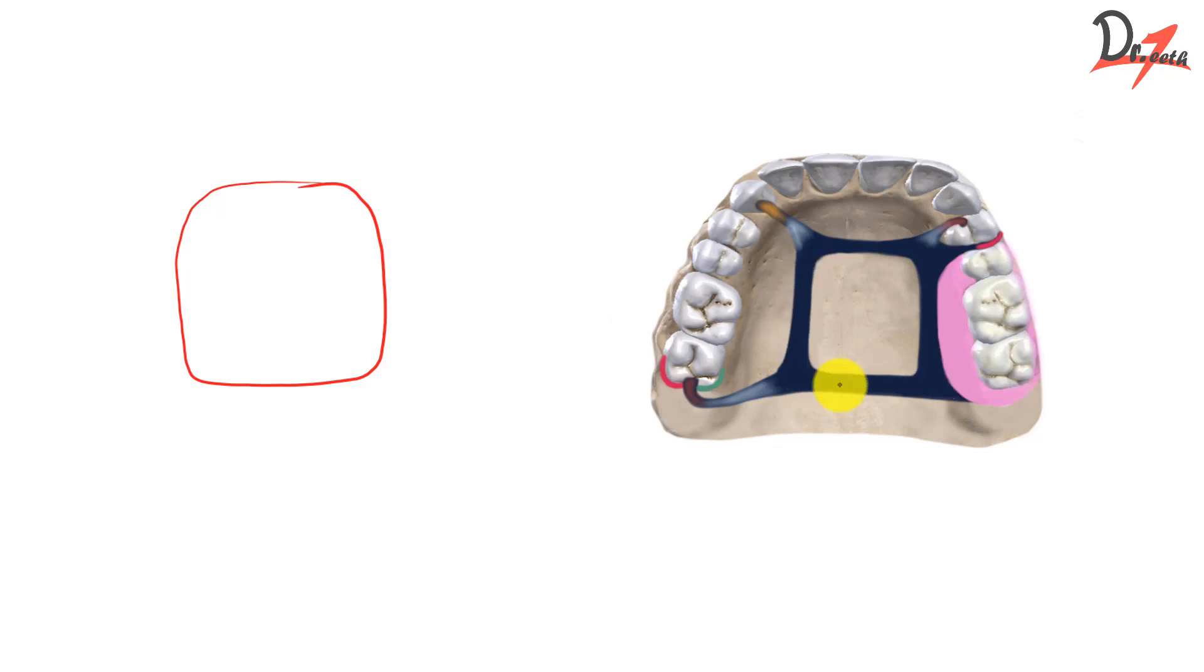So this is a connector and to be precise, this right here is a major connector because it is connecting one side of the arch to the other side of the arch. Removable dentures must extend to both side of the arch. Why? For stability because forces of occlusion can then be distributed to all the supporting teeth and tissues. And this connection between one side of the arch to the other side is established by major connector.